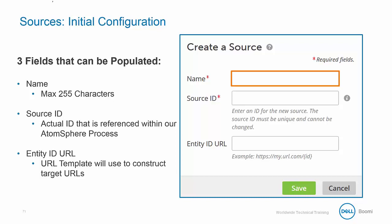The second field is the Source ID, which sets the ID for the new source and has a maximum of 50 characters. The Source ID is used to refer to the source within integrations and in calls to the repository API endpoints. Allowable characters are uppercase and lowercase letters, numbers, the underscore, and hyphen. One very important thing to understand is that once a Source ID is set, it cannot be changed.